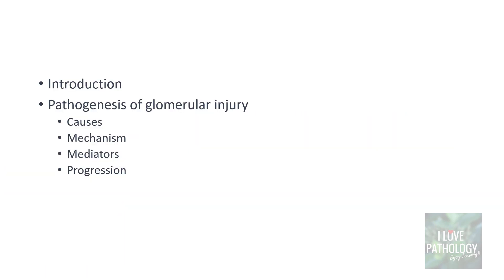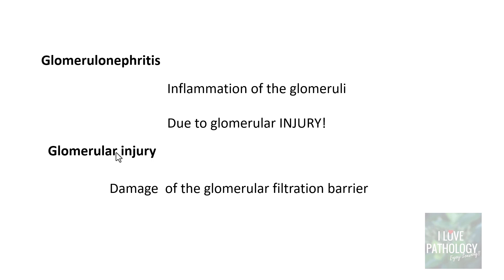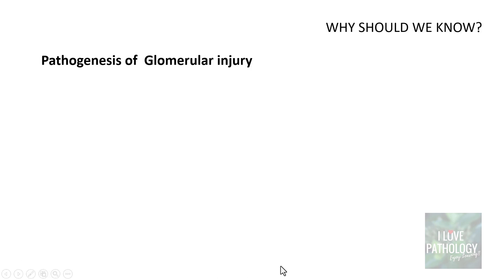In the next 10 to 15 minutes we will see what are the causes of glomerular injury, what is the mechanism of glomerular injury, what are the mediators responsible for glomerular injury, and how the glomerular injury progresses. Glomerulonephritis is simply the inflammation of glomeruli due to glomerular injury. Glomerular injury is basically damage of the glomerular filtration barrier, which leads to proteinuria, hematuria, and decrease in renal function.